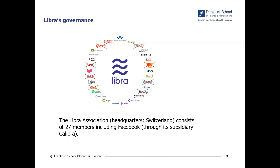The third pillar is governance — the Libra Association. This is the governance body behind the Libra project, located in Switzerland. The Libra Association currently consists of 27 members, which includes Facebook. It's important to note that Facebook is just one member out of 27 — it's often discussed as a Facebook project, but it's not. The association plans to grow to 100 members, so Facebook will relatively lose power as the number of members increases.